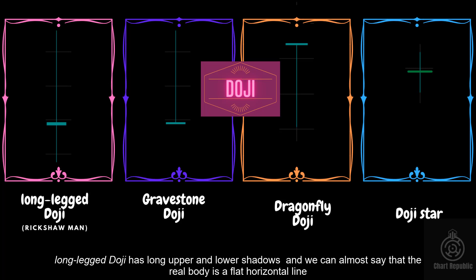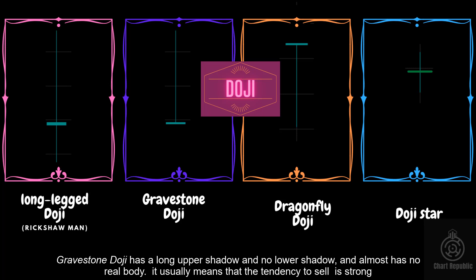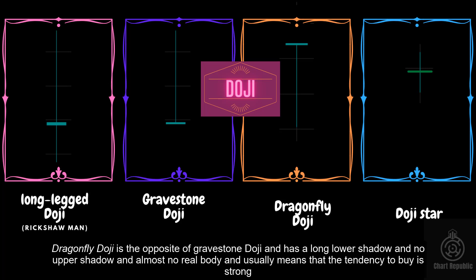Long-legged doji has long upper and lower shadows, and we can almost say that the real body is a flat horizontal line. Gravestone doji has a long upper shadow and no lower shadow, and almost no real body — it usually means that the tendency to sell is strong. Dragonfly doji is the opposite of gravestone doji, and has a long lower shadow and no upper shadow and almost no real body, usually meaning that the tendency to buy is strong.